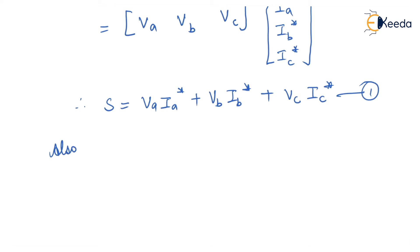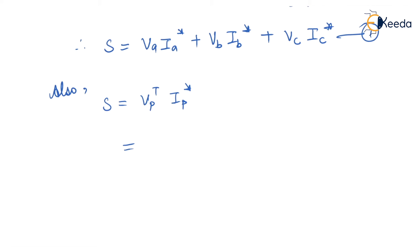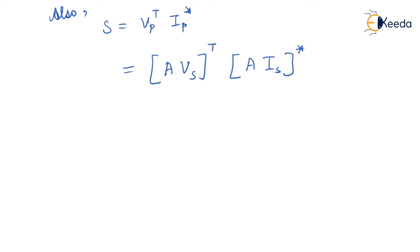Also, S equals Vp transpose into Ip conjugate, and we know Vp equals A·Vs and Ip equals A·Is. The same applies for voltage and current. So S equals Vs transpose into A transpose, A conjugate into Is conjugate. This is equation number two.